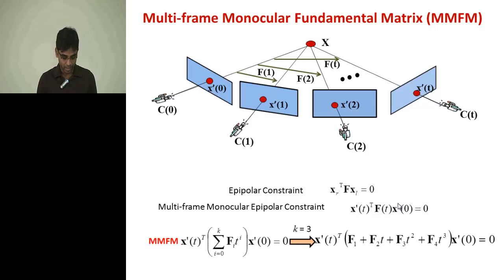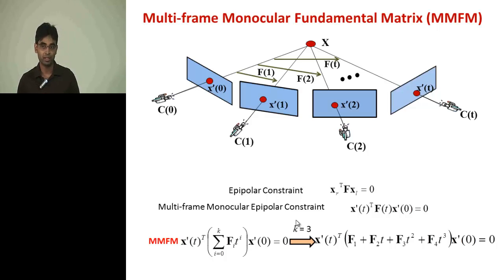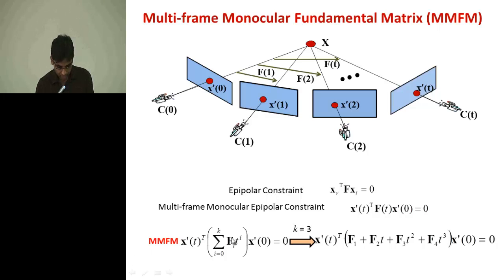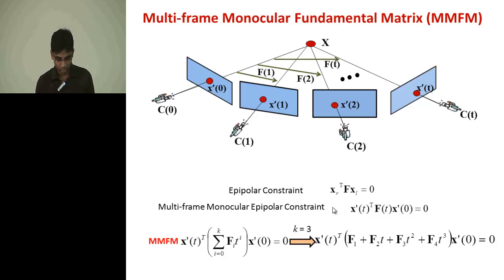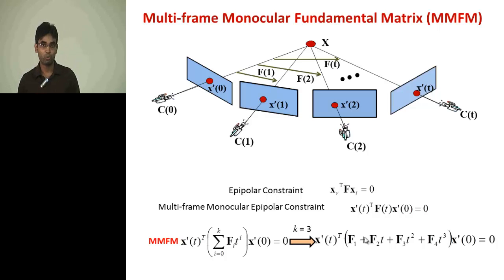The degree of the polynomial depends on the camera motion — the smoother the camera motion, the lower the degree of the polynomial. Here, F is a three-by-three matrix and we use k=3 as the degree of the polynomial, giving us 36 coefficients. A degree-three polynomial incorporates two degrees of freedom in translational motion — capturing acceleration and deceleration — and one degree of rotational freedom.